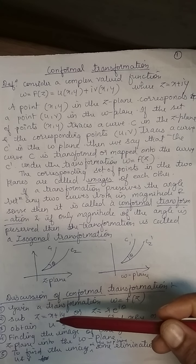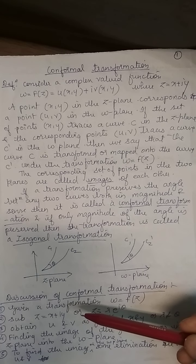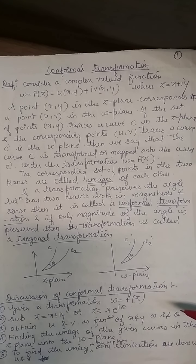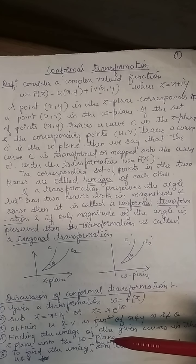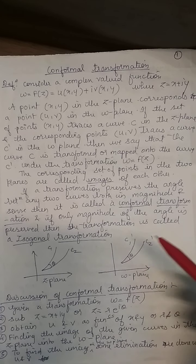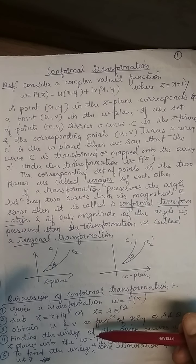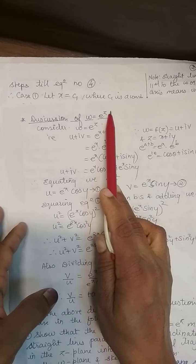After substituting z, we separate the real and imaginary terms to get u and v. Here u and v will be functions of x and y, or r and θ. Once we get u and v, we find the images of the z-plane and check the image in the w-plane. The first discussion is the transformation w = e^z.